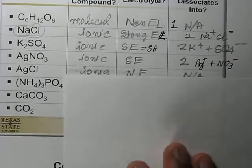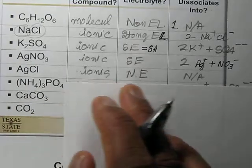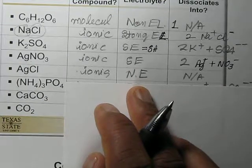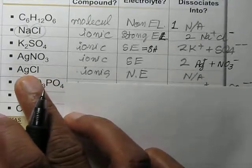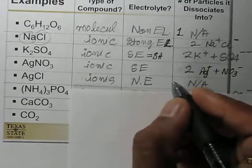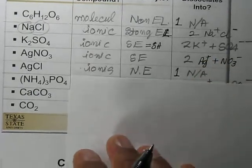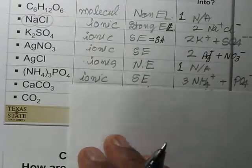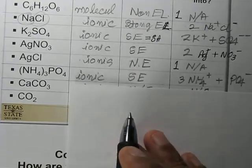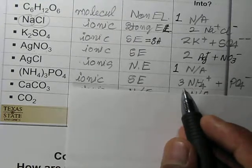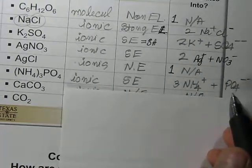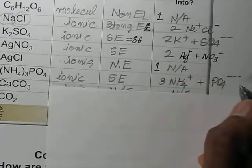Silver chloride (AgCl) is an ionic compound, but from the solubility table we know silver chloride does not ionize — so it is a non-electrolyte, and one molecule remains as one molecule. Ammonium phosphate is an ionic compound and a strong electrolyte — it dissociates into three ammonium ions and one phosphate ion, giving four total particles.